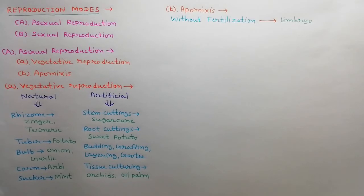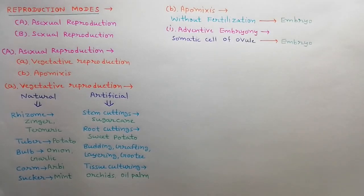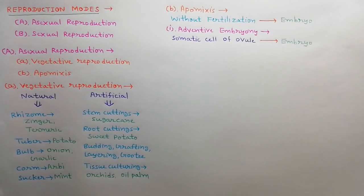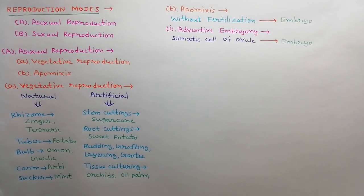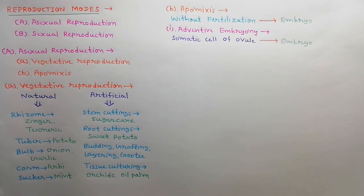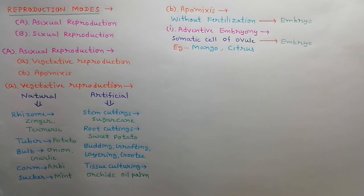Apomyxis is further divided into three types. The first type is adventive embryony. When an embryo is developed from any vegetative cell of the ovule — such as integument or chalaza — without forming an embryo sac, the process is called adventive embryony. For example, in mango and citrus.